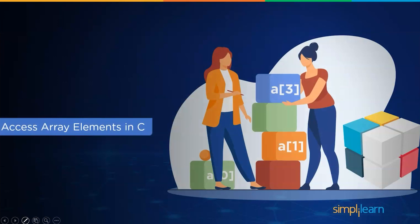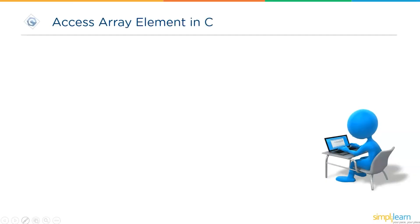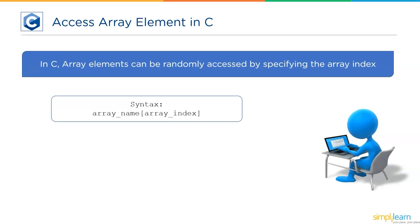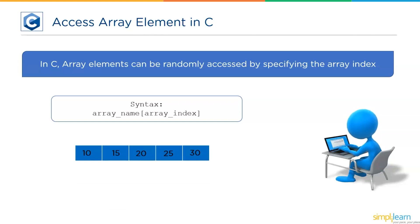Next up, we have how to access array elements in C. We can access elements randomly by specifying the array index. The syntax is: mention the array name and the index of the element. Suppose you want to access element 15 — even though it is the second element, the index would be 1, so you specify a[1]. To access the first element, the index would be 0. Similarly, to access the last element, specify a[4]; to access the third element, give a[2]; and a[3] to access the element 25.